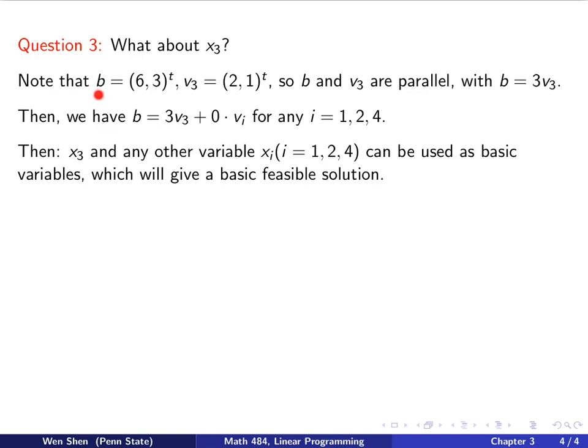We see that this is the b, (6,3), and the vector v₃ is (2,1). And we see that they are parallel. They point in the same direction, it's just b is longer. b is 3 times v₃. That means I can write b equal 3 times v₃. Then I can add 0 times vᵢ for any other vectors, i is 1, 2, or 4. So this means I can pick x₃ and any other variable, x₁, x₂, and x₄, pick any one of them. And this pair could be used as basic variables, and it will give us a basic feasible solution.